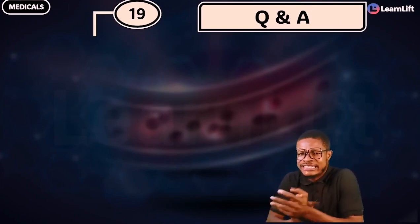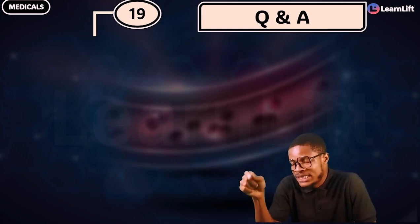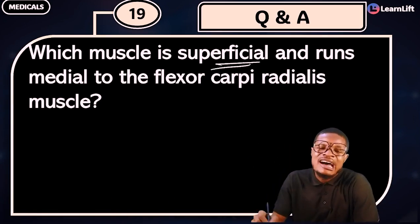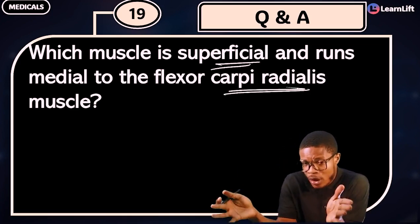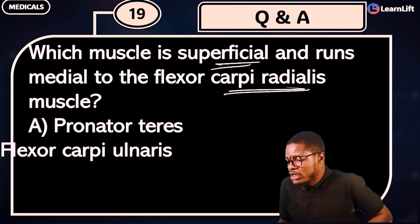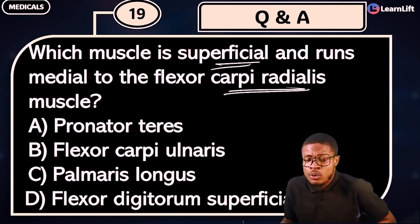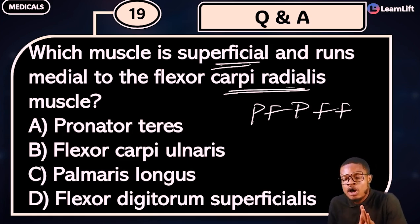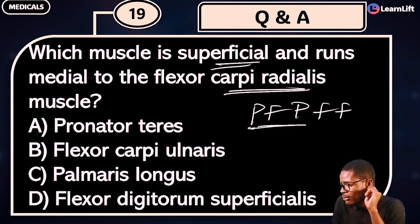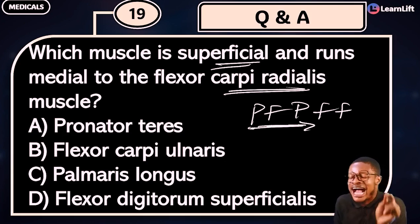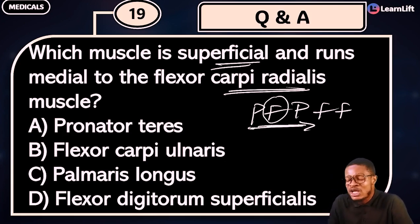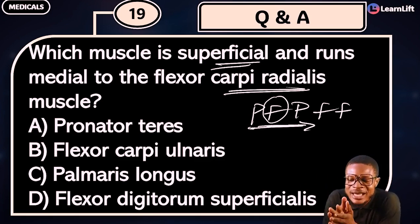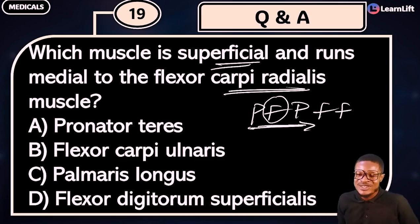Look at the next question. Which muscle is superficial and runs medial to the Flexor Carpi Radialis? Your PF-PFF family runs from lateral to medial. So which one is medial to the Flexor Carpi Radialis — is it the Palmaris Longus or the Pronator Teres? Drop the answer in the Q&A or comment section of the app. I'll see you in the next class where I'll be looking at the deep anterior compartment muscles of the forearm.